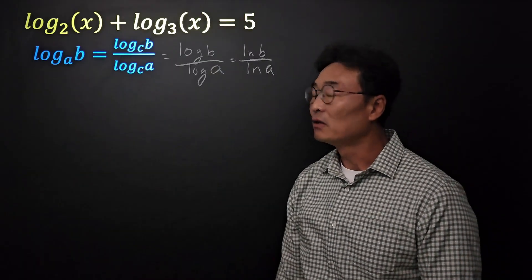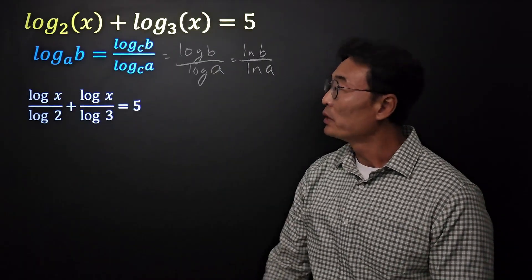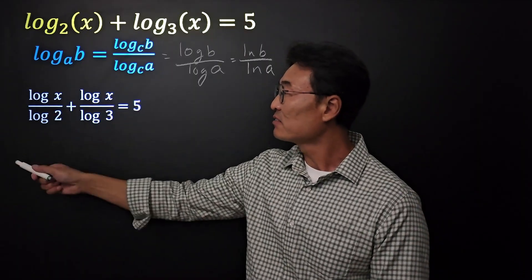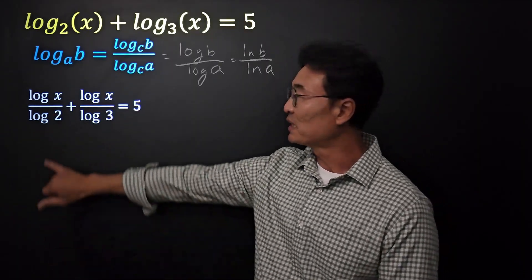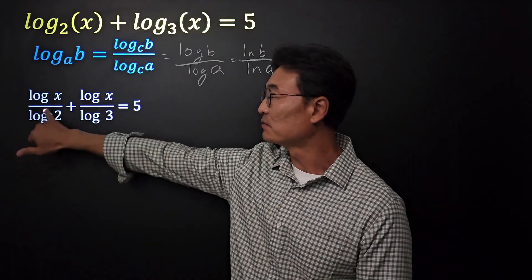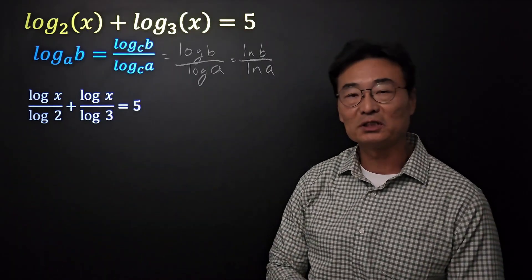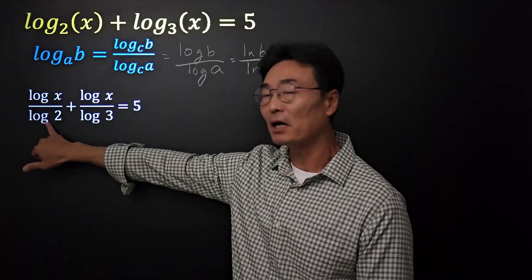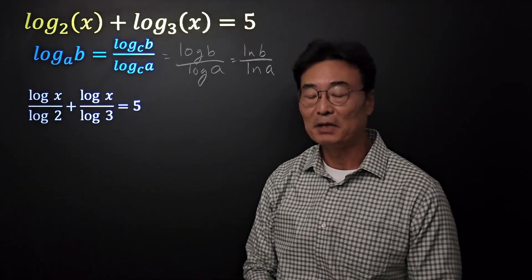Then let's take a look at that log of base 2 of x. We could change that as log of x over log of 2. Once again, notice I'm using the ones with the base of 10 on the top and the bottom. What's important is that the base on the top and the bottom, or the numerator and denominator, are the same.